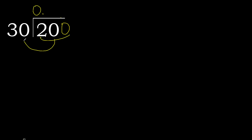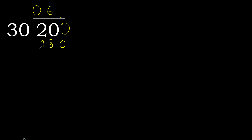200 is not less, therefore work with 200. 30 multiplied by which number is nearest to 200 but not greater? 30 multiplied by 7 is greater. 30 multiplied by 6 — ok, is not greater. Subtract 20. Next.